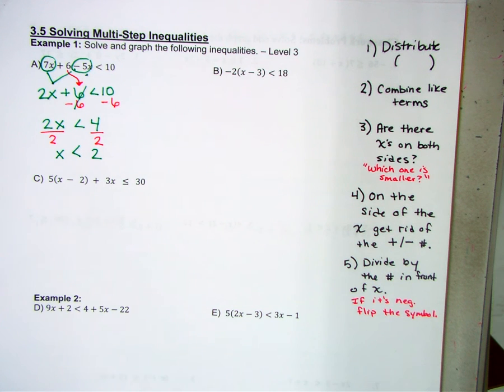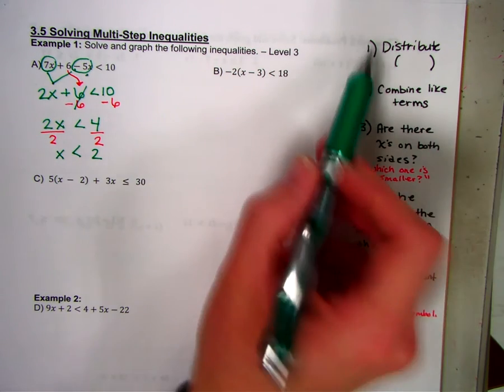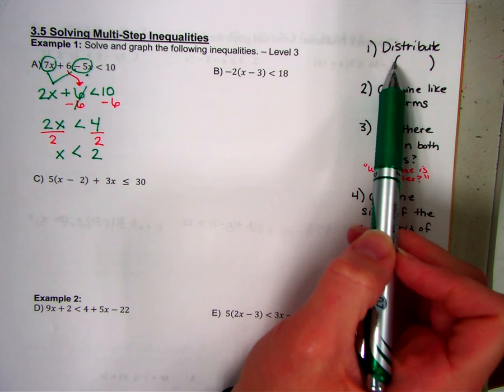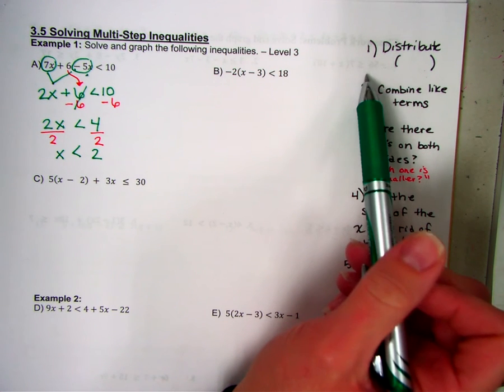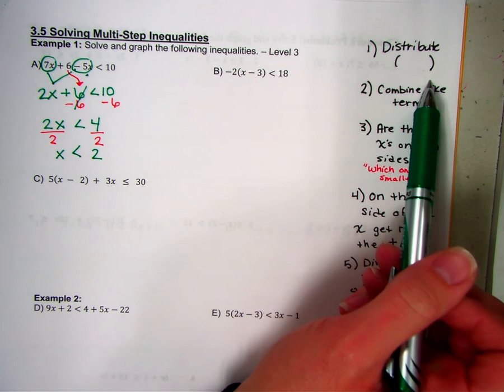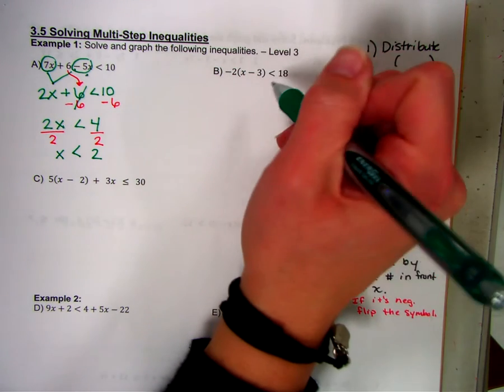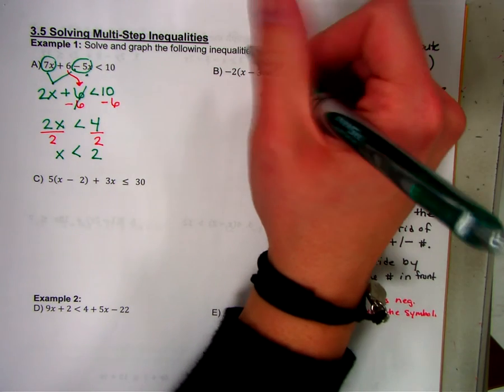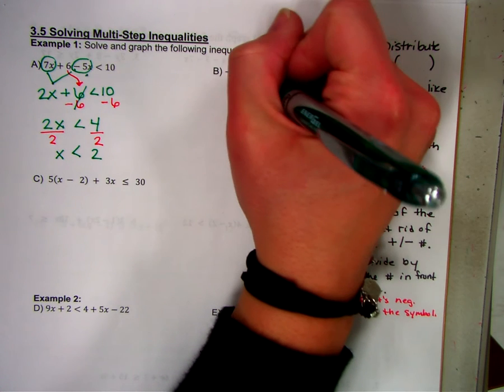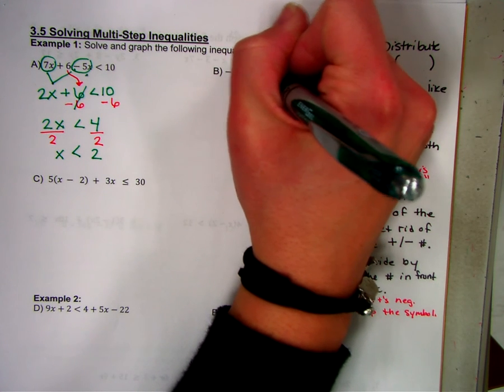Okay. Jump over to the next one. So letter B. Again, I'm going to follow through my process here. The first thing I look for is do I distribute. Is there parentheses? So here I currently have parentheses. So I am going to multiply that through.